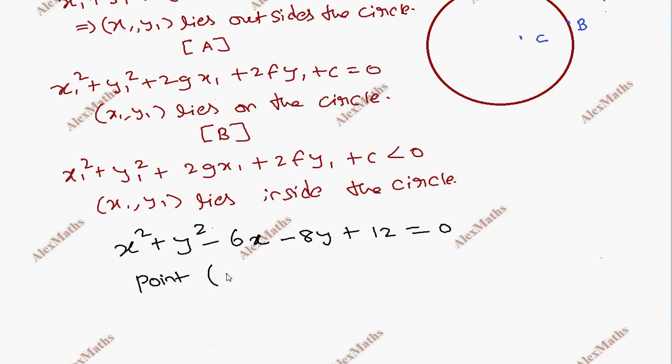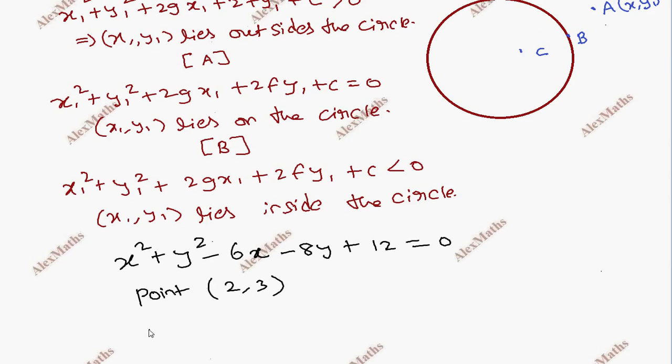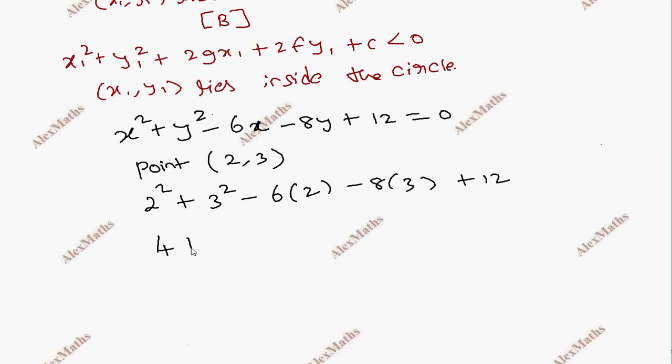Now here is the point. 2 square plus 3 square minus 6×2 minus 8×3 plus 12. You get the simplification: 4 plus 9 minus 12 minus 24 plus 12. This one is 13 minus 24, which is minus 11, which is less than 0.